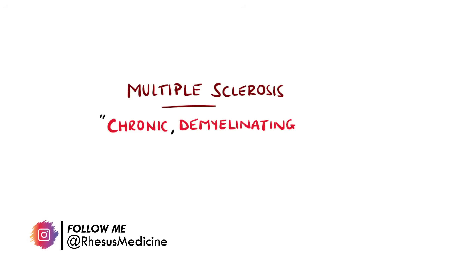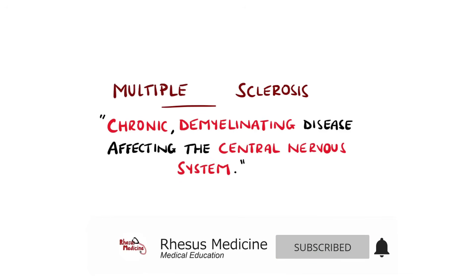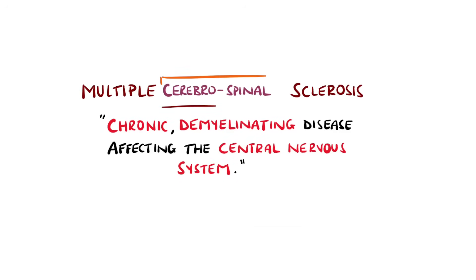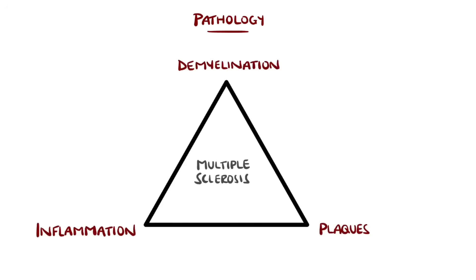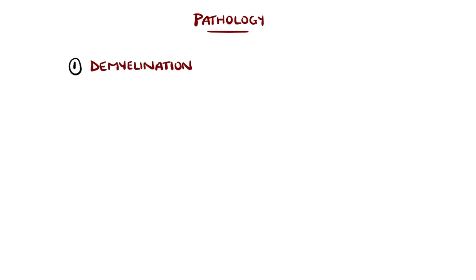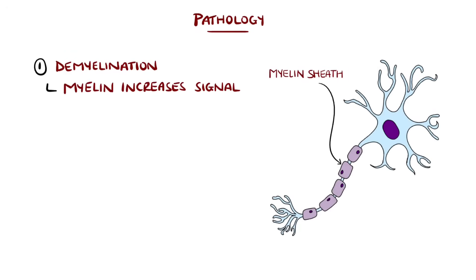Multiple sclerosis is a chronic demyelinating disease affecting the central nervous system. The name is short for multiple cerebrospinal sclerosis, given due to the multiple plaques that develop within the brain and spinal cord. The disease is characterized by demyelination — the loss of the myelin sheath — and associated plaques in the central nervous system as a result of focal inflammation.